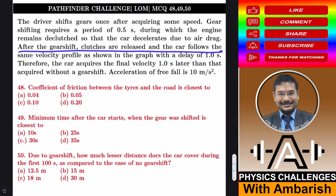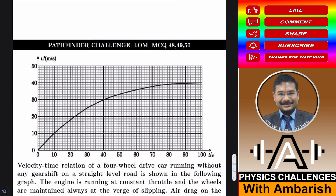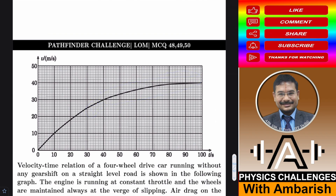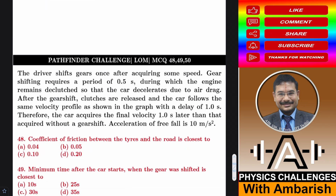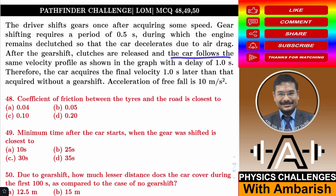After gear shift, the clutch is released and the car follows the same velocity profile as shown in the graph with a delay of one second. So gear shifting takes one second total: the car slows down a little, then regains speed, and from that point the graph is shifted one second to the right. Therefore the car requires the final velocity one second later than it would without a gear shift. Acceleration of free fall is 10 m/s².